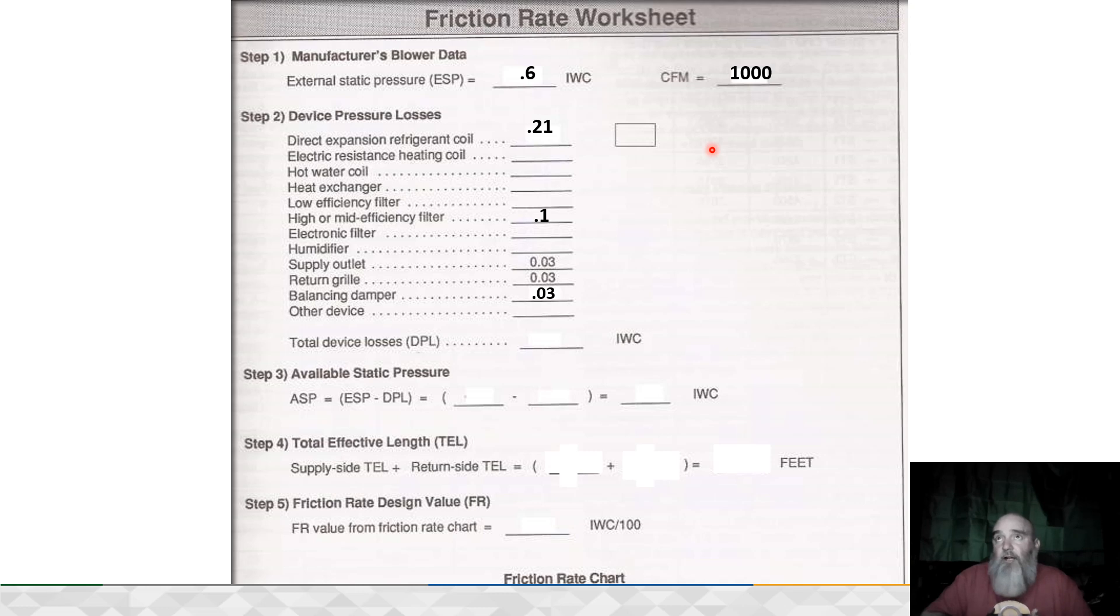It's based off the sensible BTUs that are required for the house. The sensible heat ratio of the house dictates what our CFM per ton value is. I have a sensible heat ratio video—go look at that if you're not familiar with sensible heat ratio. We're talking about duct slides today, though.